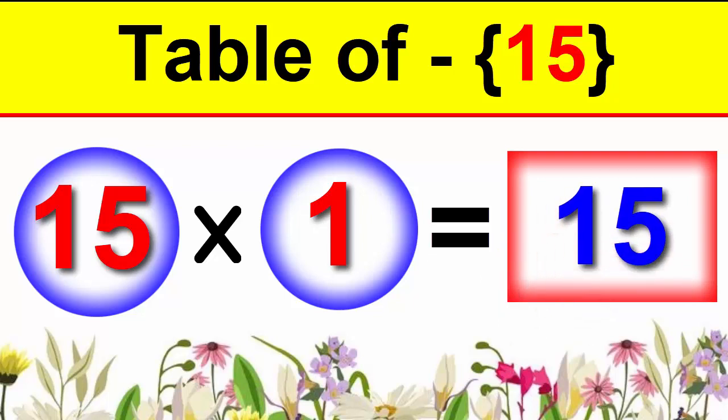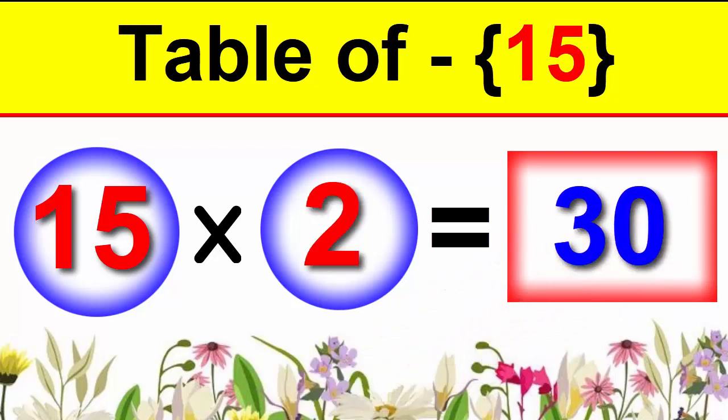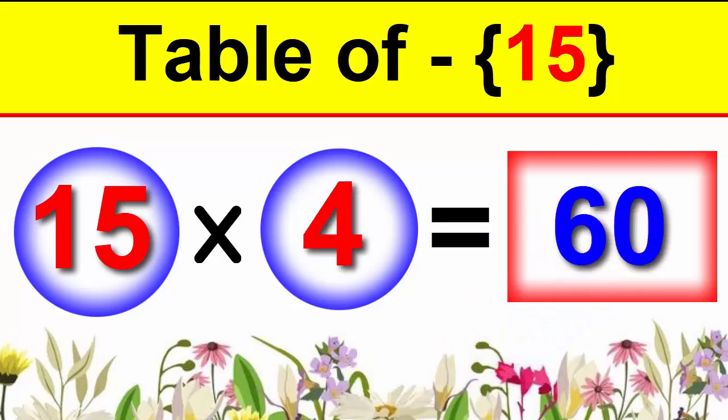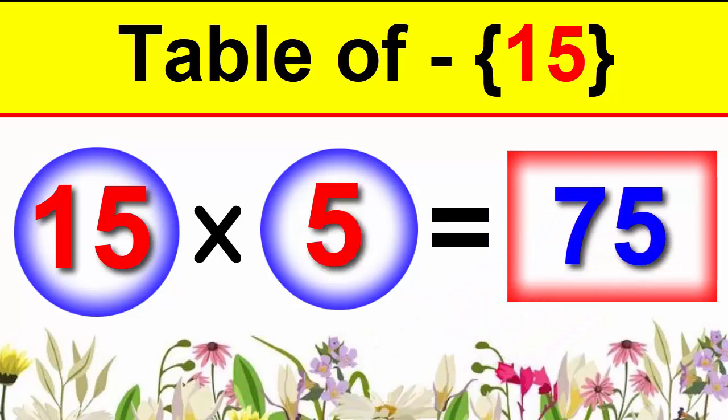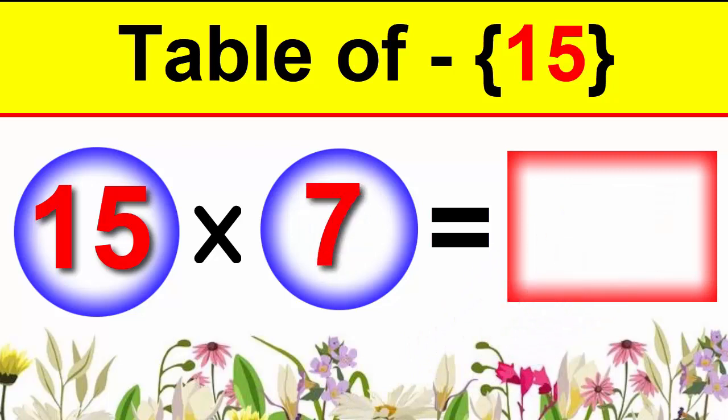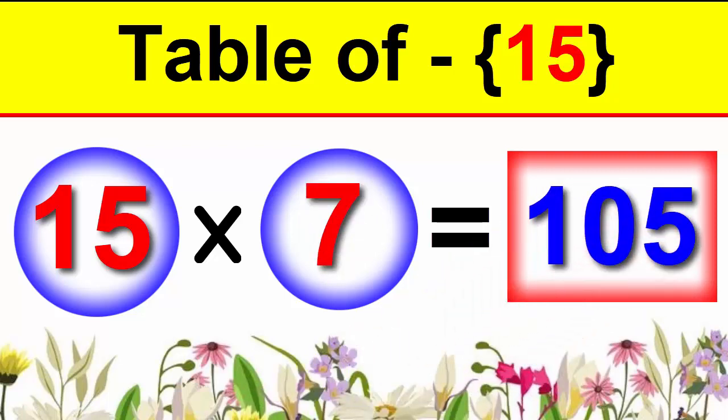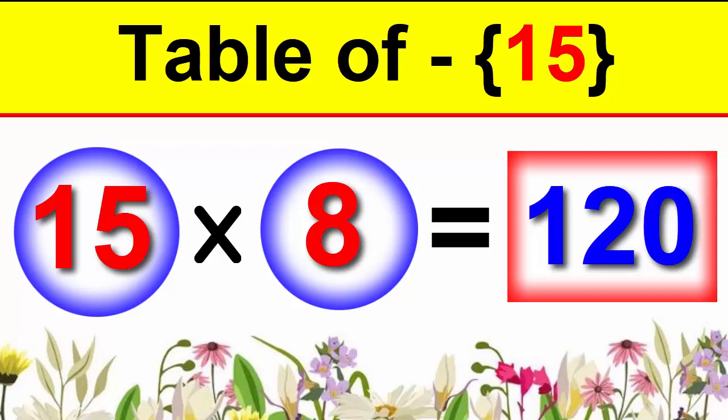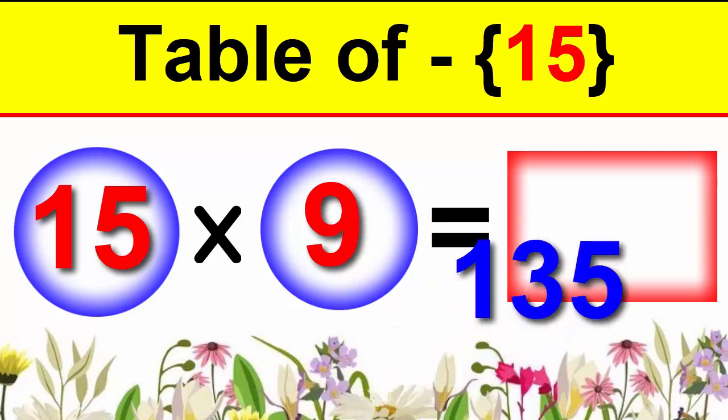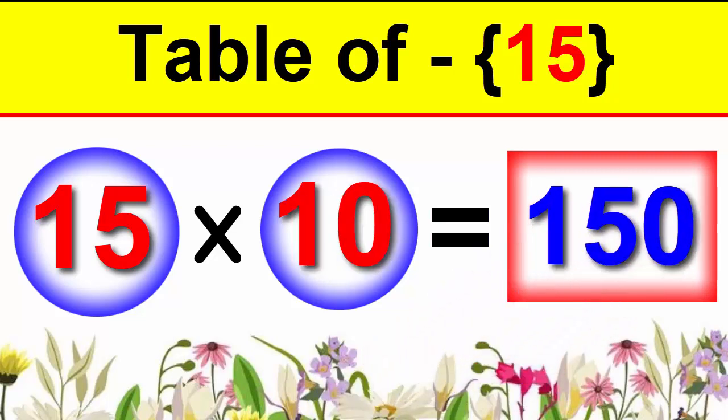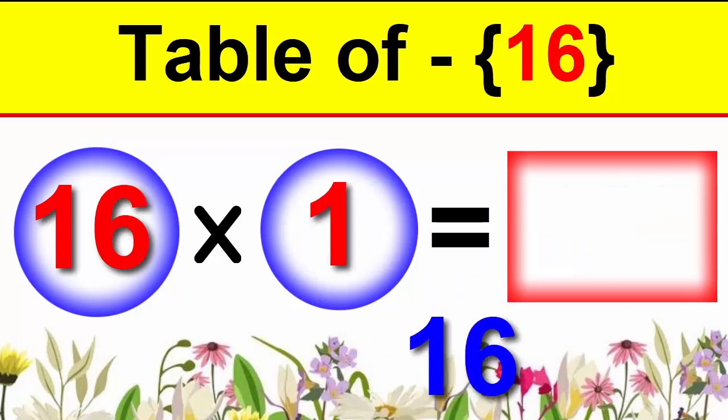15×1 is 15, 15×2 is 30, 15×3 is 45, 15×4 is 60, 15×5 is 75, 15×6 is 90, 15×7 is 105, 15×8 is 120, 15×9 is 135, 15×10 is 150.